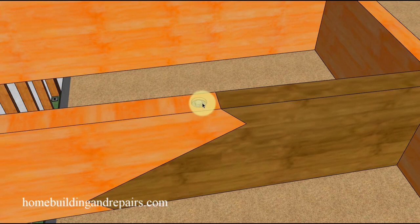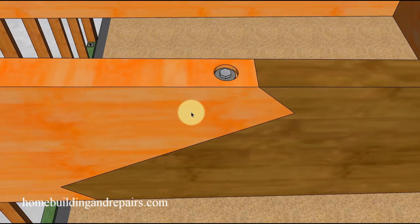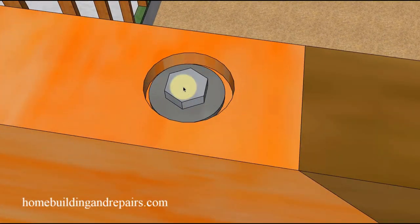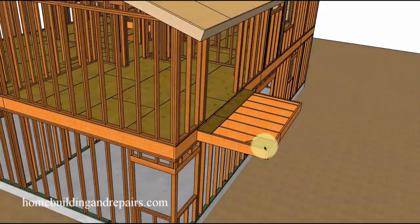...you could always use a bolt or an all thread. In our example here, we might be using something about three-eighths of an inch in diameter. You would simply countersink a hole here and then drill a hole all the way through both pieces of lumber and then install a nut and a washer on the bottom to prevent this board from moving forward and ruining your repair.